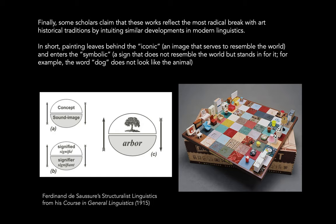It doesn't matter what they are. But if both players agree that's what they are, then they can function as king, queen, pawn, bishop, knight, rook, and so on. So this shows that the sign is arbitrary. It doesn't matter what the sign is, as long as it's agreed upon, you can use it that way.